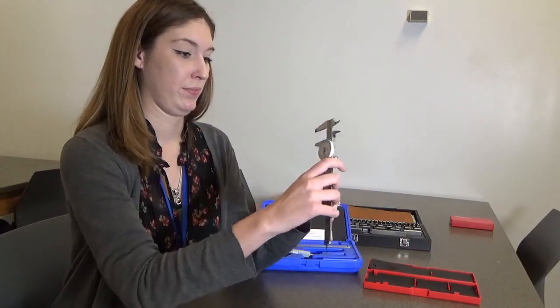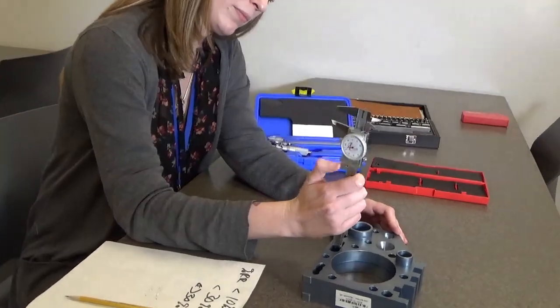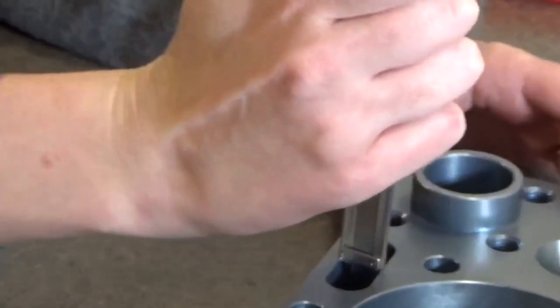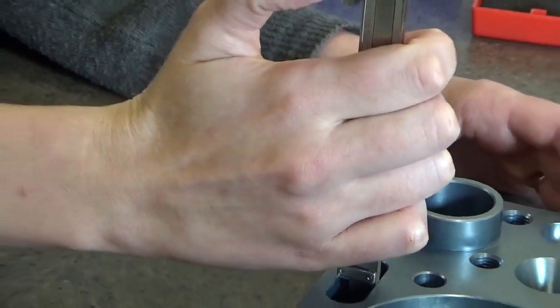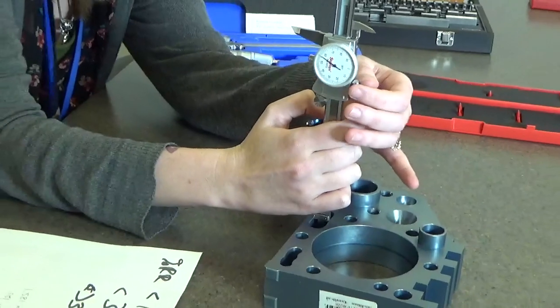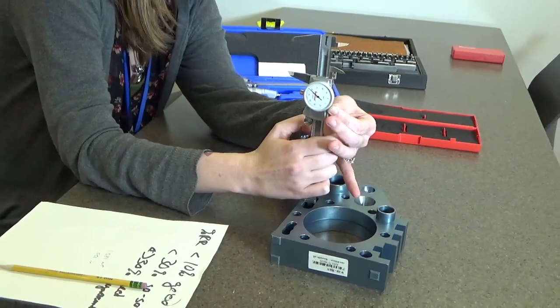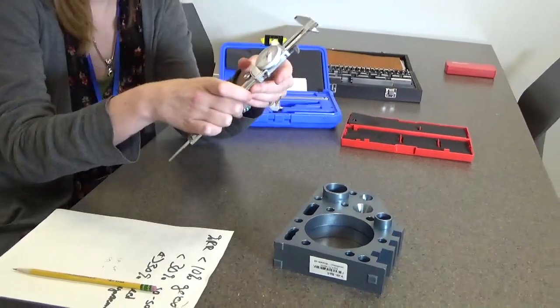There's also this little finger that sticks out from the back, which is used for depth. Taylor is demonstrating how you would lower it into the work piece, down to your work surface. And then you can set your screw again and pull that out from your work piece.